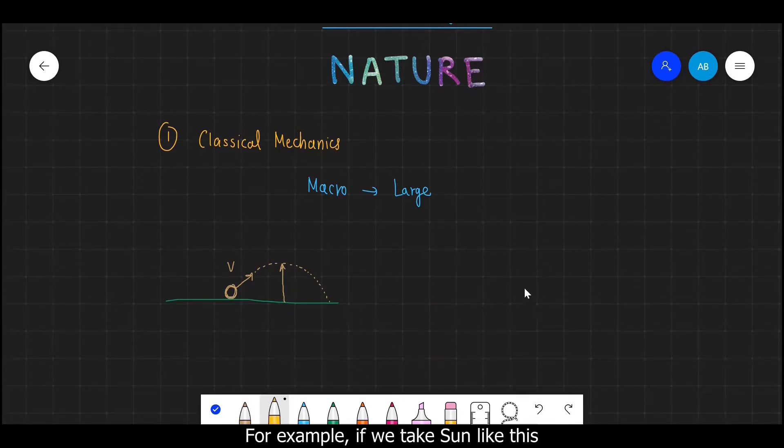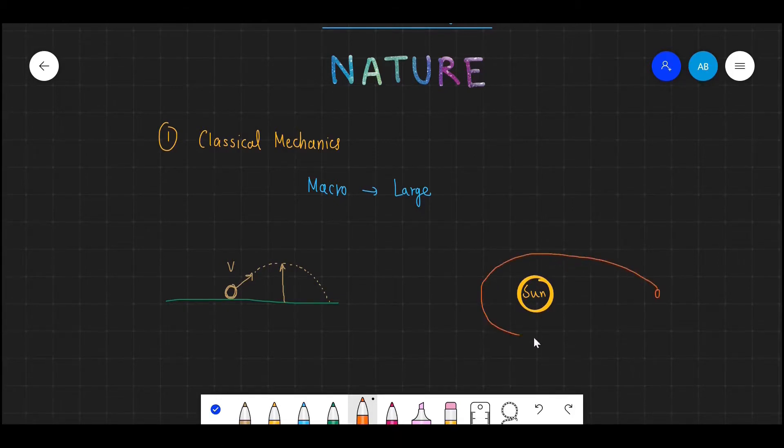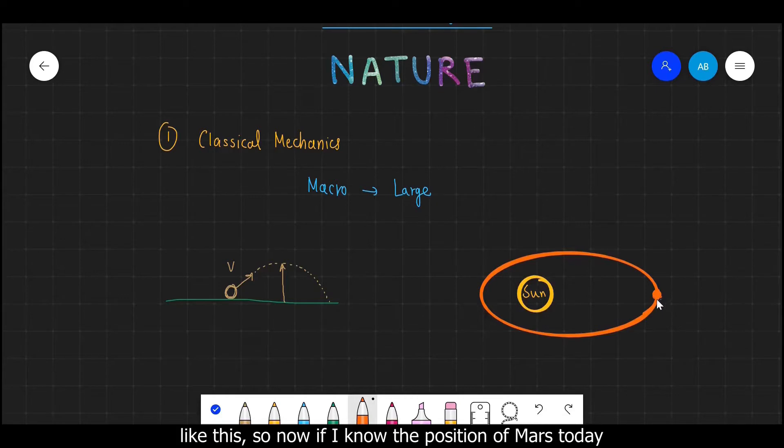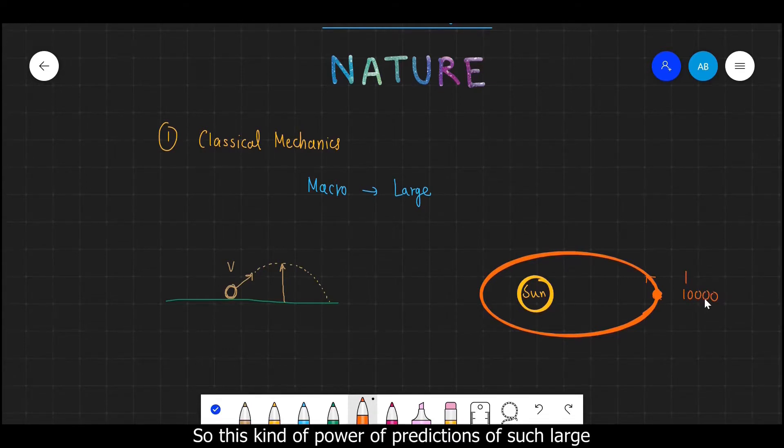And not just football, even for stars. For example, if we take Sun like this and suppose the planet Mars is going around Sun in such an orbit like this. So now if I know the position of Mars today and its velocity in its orbit, then I can predict where this planet Mars will be after one year or even 10,000 years.